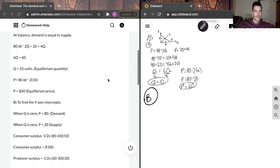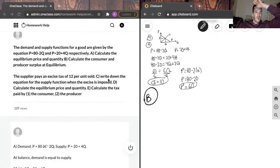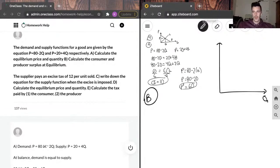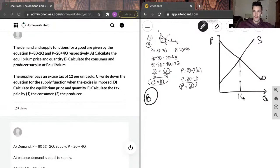We can move on to B. He says, calculate the consumer and producer surplus at equilibrium. So, if I draw this, I should probably actually just represent this graphically, too, for you guys. We've got supply and demand. And we know that the equilibrium quantity here is going to be 10. And we know that the equilibrium price is going to be 60.